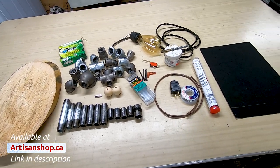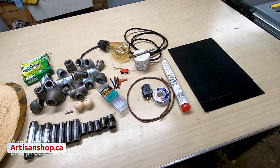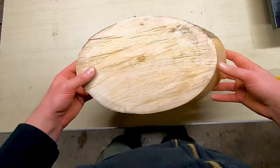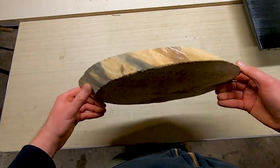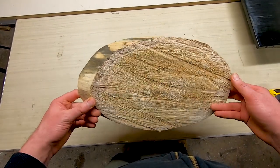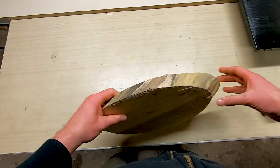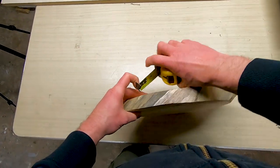DIY lamp kits like this are available at artisanshop.ca. A link is in the description below. Let's get started. I started off with an oval I had cut out of some Norwegian maple, a tree that had come down from my backyard. It doesn't really matter what material you use for the base. You could even use a piece of 2x6 if you wanted to.